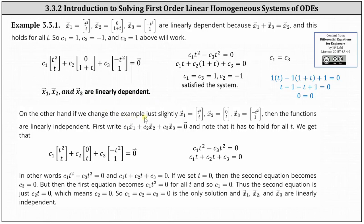On the other hand, if we change the example just slightly — for example, if we change x2 to zero t rather than zero one plus t — then the functions are linearly independent. Going back to our equation, c1 times x1 plus c2 times x2 plus c3 times x3 equals a zero vector, we now have the system of equations shown on the right. If we let t equal zero, the second equation indicates that c3 must equal zero. But then if c3 is equal to zero and we go back to the first equation, we have c1 t squared equals zero for all t, indicating c1 must equal zero. So if c1 and c3 are both equal to zero and we go back to the second equation, we get c2 times t equals zero, which means c2 is also equal to zero. So here c1 equals c2 equals c3 equals zero is the only solution, and x1 through x3 are linearly independent.